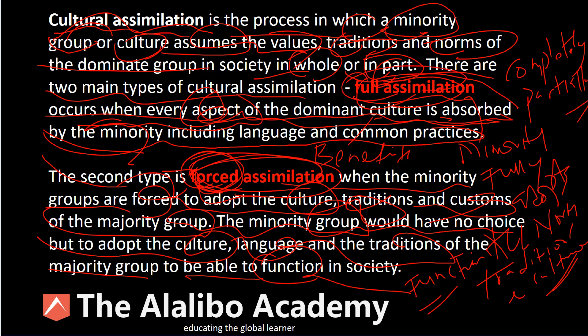It's important to understand the differences between the two types. Full assimilation comes with benefits and is voluntary — the minority group voluntarily embraces the culture of the majority. Forced assimilation is not voluntary; it is forced because you cannot function in society otherwise. That is forced assimilation, that is full assimilation, and that is cultural assimilation in general.